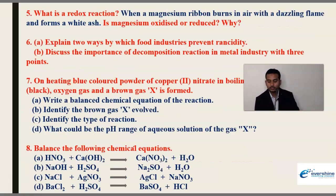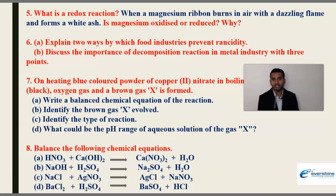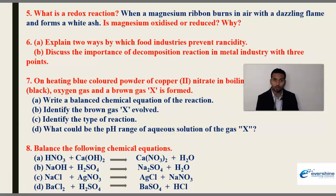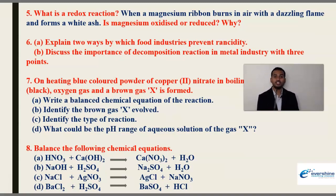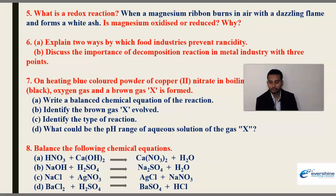Next question: What is a redox reaction? When a magnesium ribbon burns in air with a dazzling flame, a white ash is produced. The question asks: Is magnesium oxidized or reduced during this process? You have to identify what is happening — whether magnesium is getting oxidized or reduced — and give the reason for that.